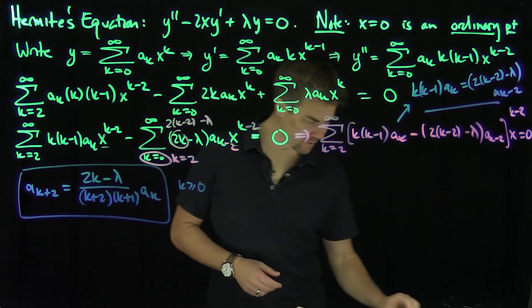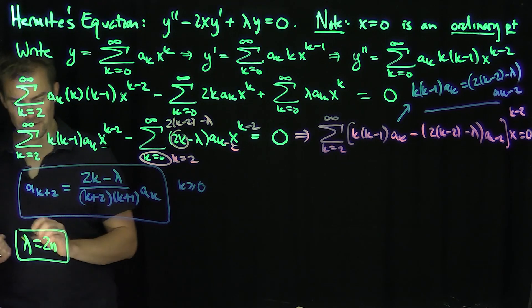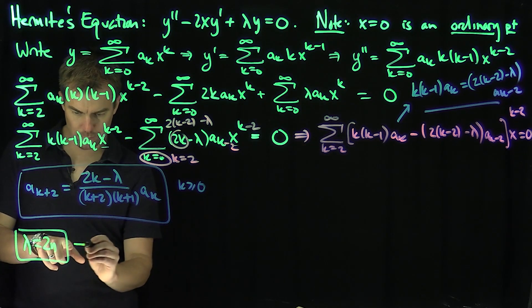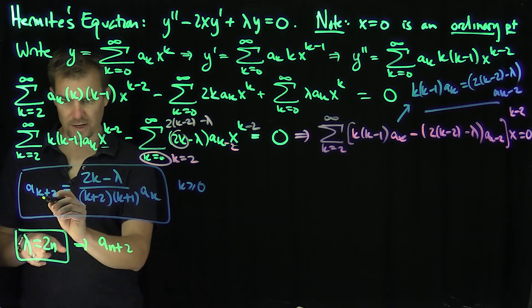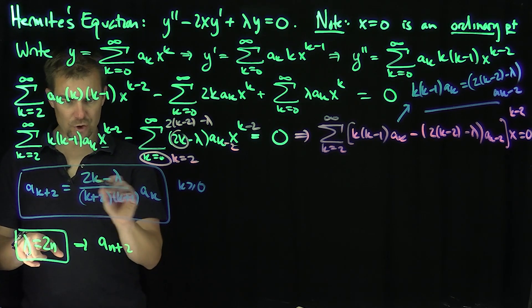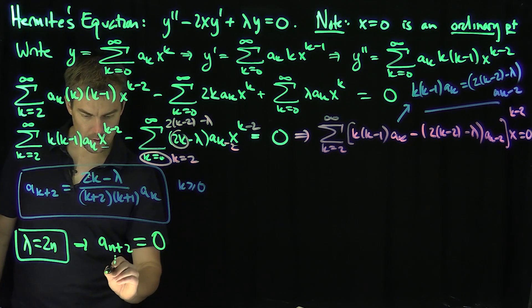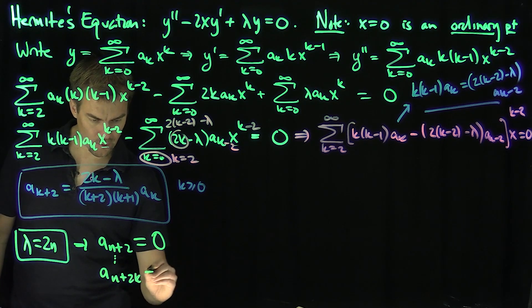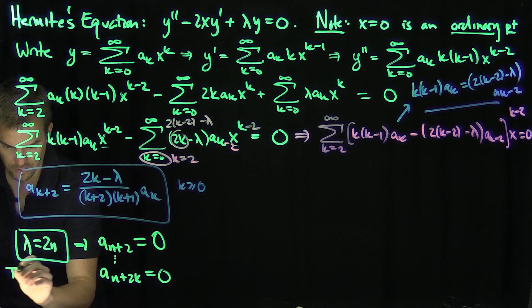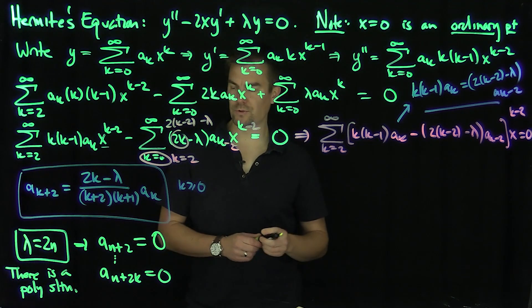An important special case: if we choose lambda equal to 2n, then when k equals n we get a_{n+2} equal to (2n minus 2n) divided by something, which equals 0. This implies all coefficients a_{n+2k} equal 0 past that point. So polynomial solutions exist when lambda equals 2n.